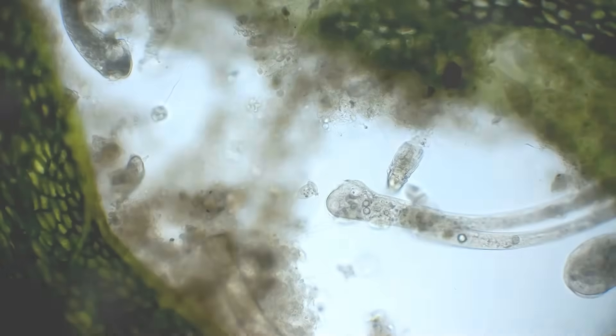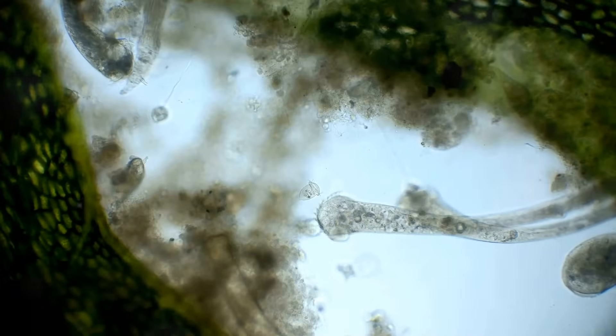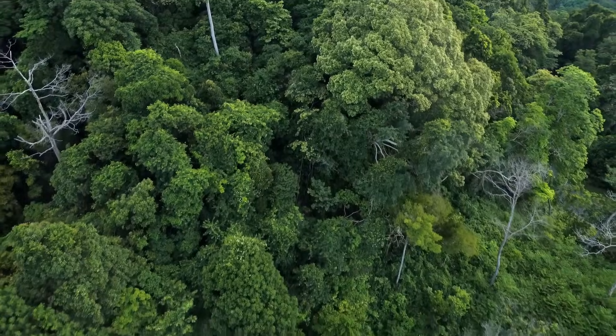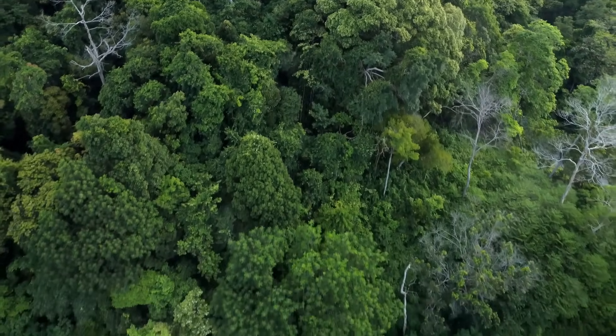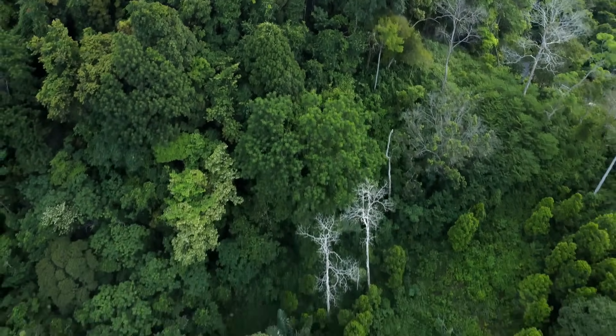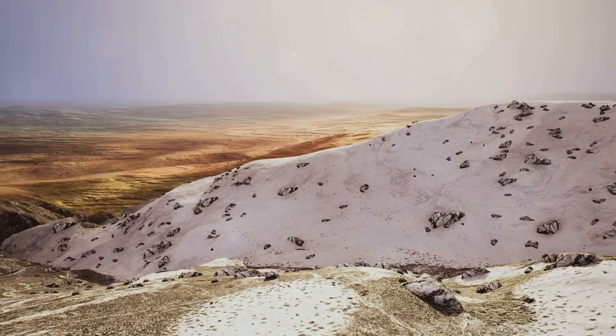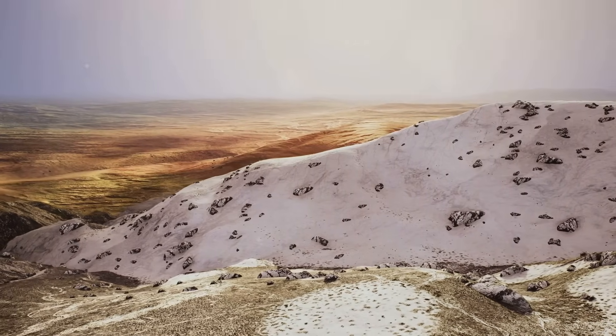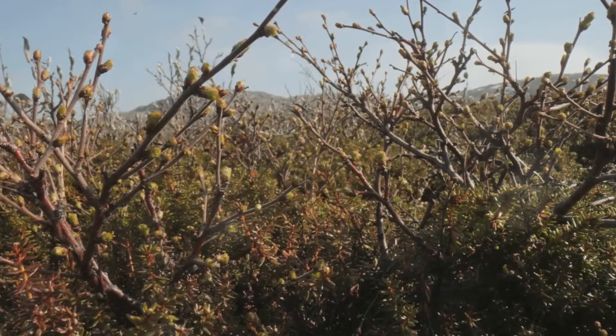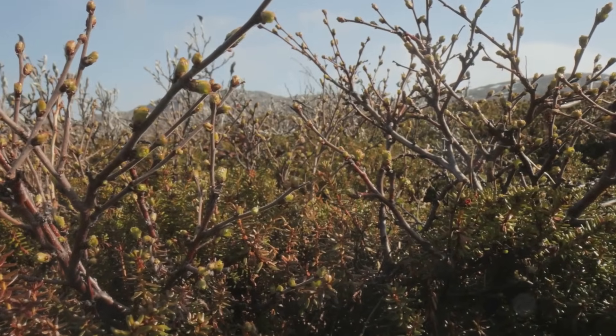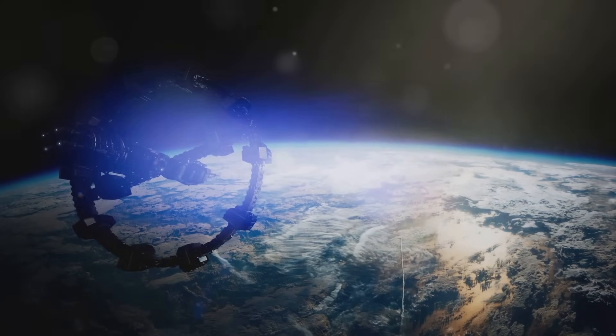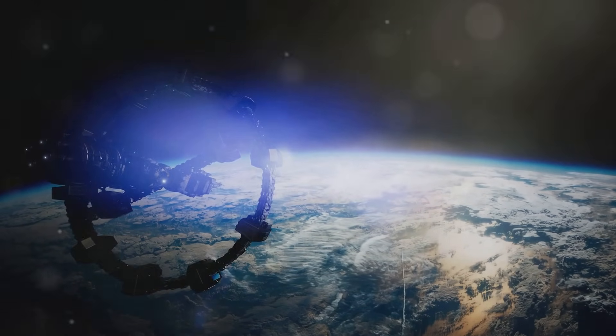Earth is teeming with life, from microscopic bacteria to giant whales. These life forms are part of interconnected ecosystems. We have lush forests, vast oceans, icy tundras, and scorching deserts. Each ecosystem has unique plants and animals adapted to survive there. These ecosystems are all interconnected, highlighting the delicate balance of life on Earth.